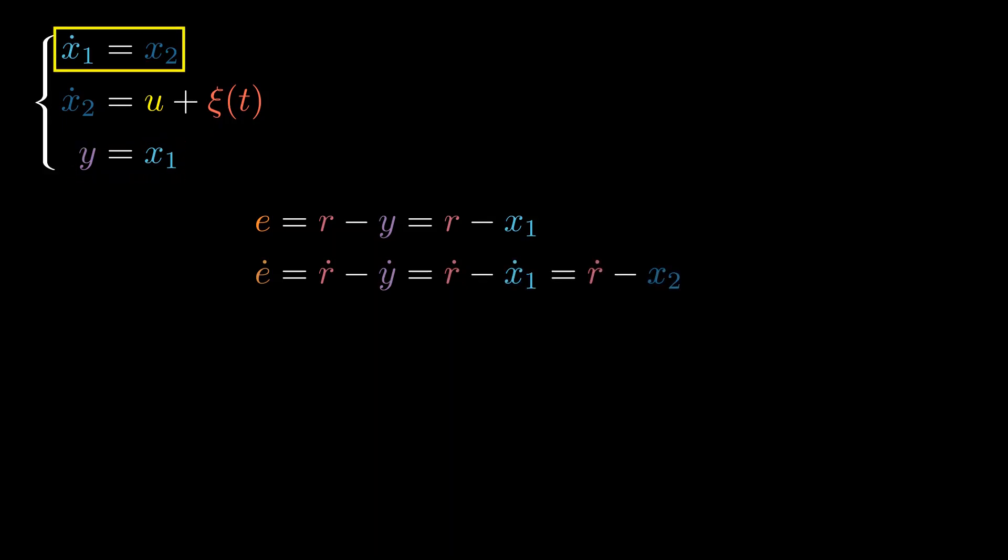We can obtain the derivative of the error signal by differentiating the above equation. Now, let's use the fact that x1 dot is equal to x2. Same logic applies to the second derivative of the error signal, but we'll start from the last result this time.